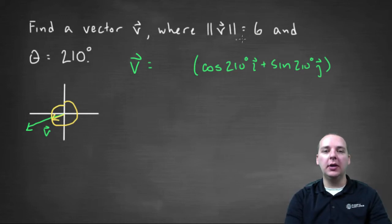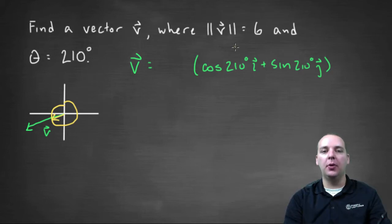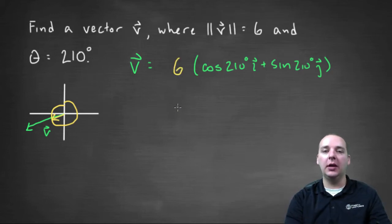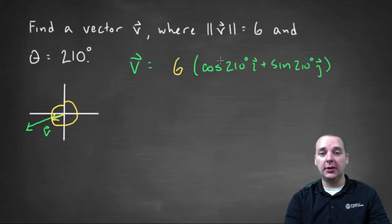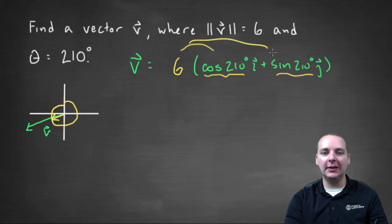So what we're going to do next is scale this vector out to have the appropriate length by multiplying the whole vector by a scalar of six. Once we figure out what the cosine of two-ten and the sine of two-ten are, we'll distribute the scalar of six to the i and j components.